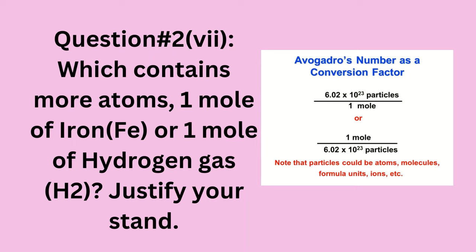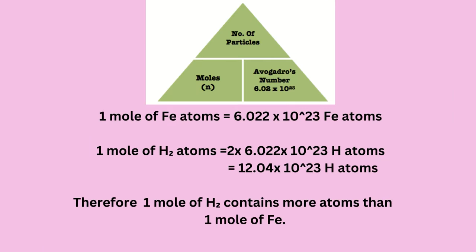Question number two, part seven: which contains more atoms, one mole of iron or one mole of hydrogen gas? Justify your answer. One mole of iron = 6.022 × 10²³ iron atoms. One mole of hydrogen gas presents in the form of hydrogen molecules having two atoms in each molecule, therefore = 2 × 6.022 × 10²³ = 12.04 × 10²³ hydrogen atoms. So, one mole of hydrogen molecules contains more atoms than one mole of iron.